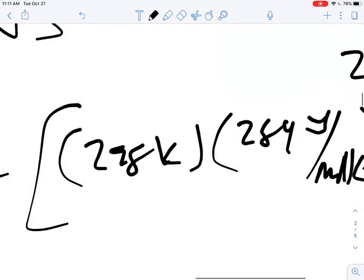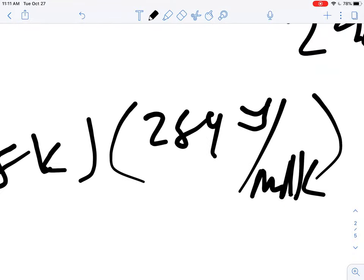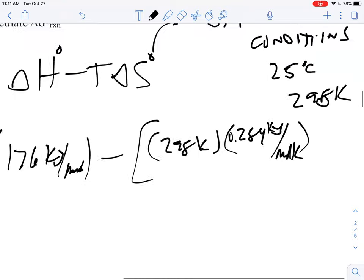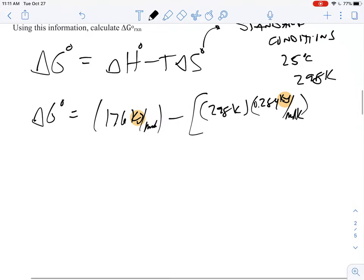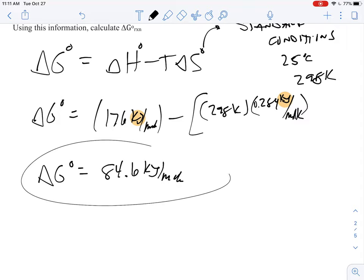And so what I usually do is I take the joules and turn it into kilojoules by dividing by 1,000. And so now I have 0.284 that's there. So now my kilojoules is the same here and here and I'm in good shape. And now I'm ready to go and do the math on this. And so consequently, when I'm all said and done with this, I end up with about 84.6 kilojoules per mole as my answer.